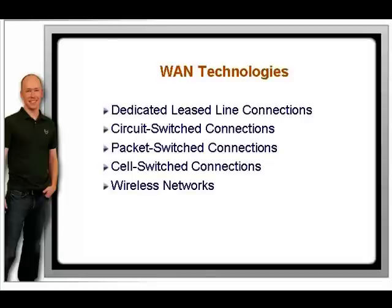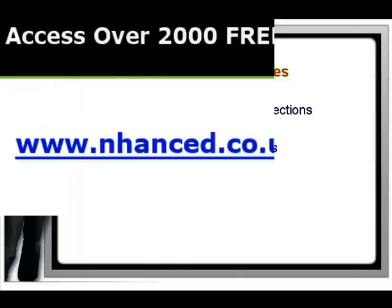Cell-switching is similar to packet-switching, but with packet-switched networks the size of the unit of data — called frames — is variable, whereas cell-switched units, called cells, are of a constant size. This makes handling heavy traffic loads easier and more efficient. Cell-switched solutions such as ATM (Asynchronous Transfer Mode) tend to be big, fast, and robust. There has been a boom recently in the deployment of wireless networks for both LAN and WAN applications. The IEEE 802.11 wireless fidelity standard, affectionately known as Wi-Fi, specifies a growing set of standards for short-range, high-speed wireless systems good for everything from mobile device connectivity to home media center systems.